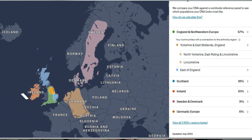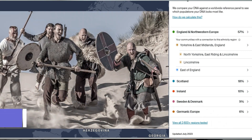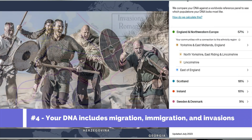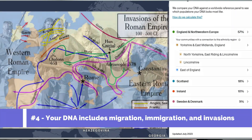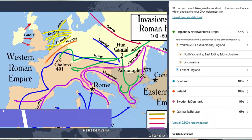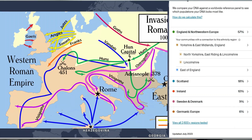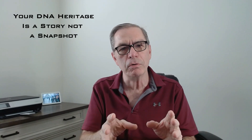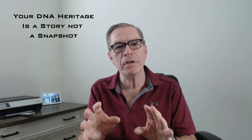Let's look at my DNA heritage again. Any short history of England will include invasions by Vikings from Sweden and Denmark, and the Saxons from what is now Germany. This is the story of England — and this is the story told in my DNA. Always consider that your DNA heritage is telling your story rather than just a snapshot.